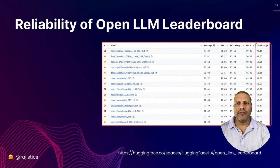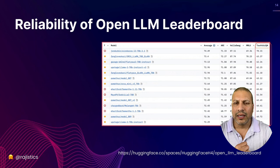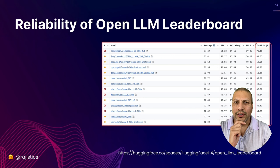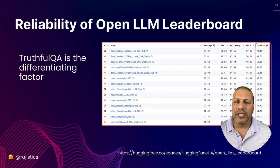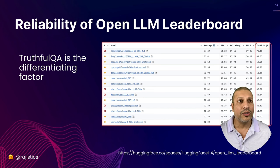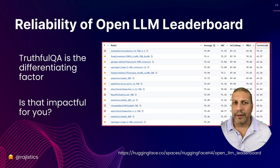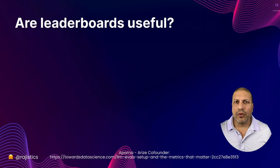The Hugging Face leaderboard has other issues — it's based off four datasets, and if we look at the differences between the top models, it's largely based on one dataset called TruthfulQA. I ask you: is how a model does on TruthfulQA really the differentiating factor for you? How does that relate to the use cases you're working on?